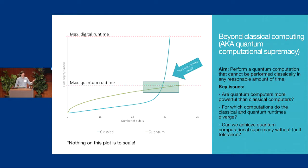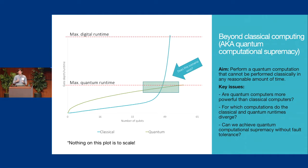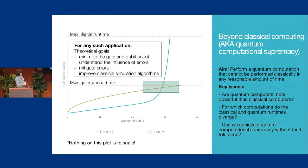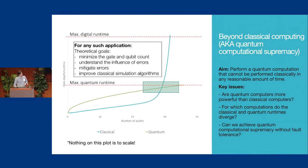There will be a crossover point where quantum runtime — meaning depth or whatever measure you use for circuit complexity — beyond which the quantum computer won't work anymore due to decoherence or noise. The classical runtime will be much longer. We want to aim for applications which land us before we hit the noise limit. We need to find the hardest quantum computations we can perform with the fewest qubits and gates. As theorists, our goals are to minimize gate and qubit count, understand the influence of errors, mitigate errors, and improve classical simulation algorithms.